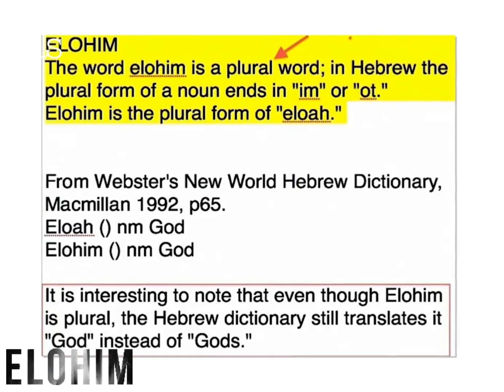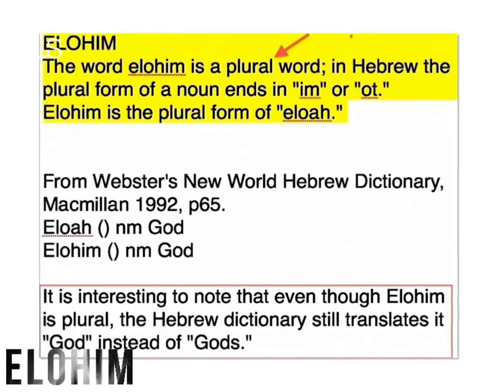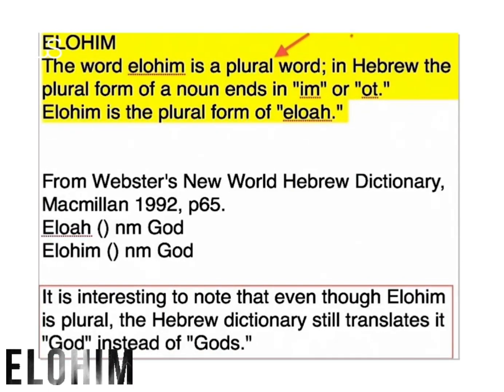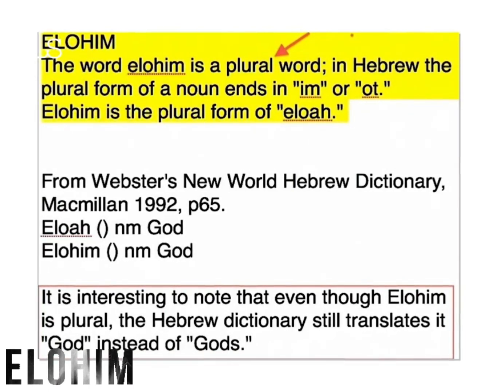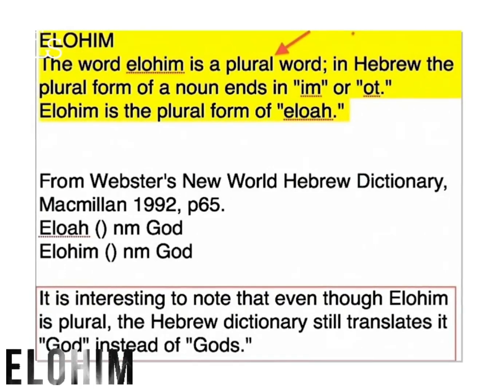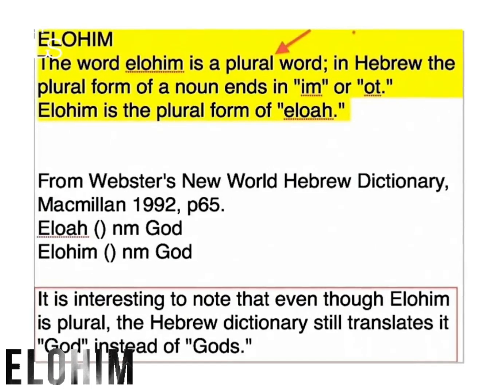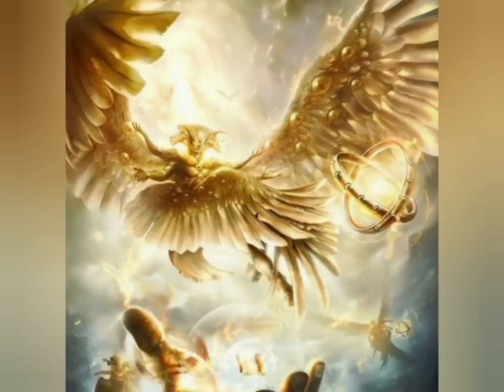On the bottom, it says it is interesting to note that even though Elohim is plural, the Hebrew dictionary still translates it as 'God' instead of 'Gods.' This is what has confused people around the world, because the actual word in the Bible is 'Gods.'